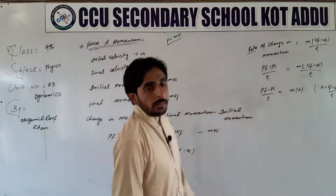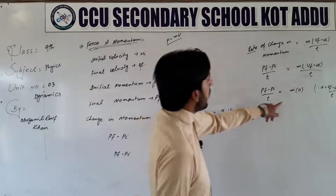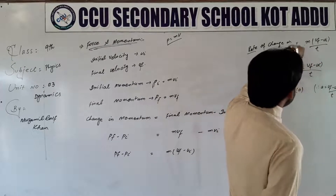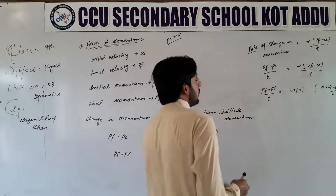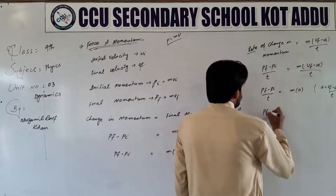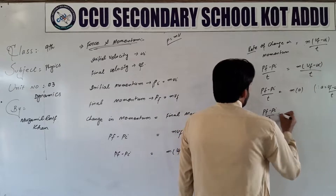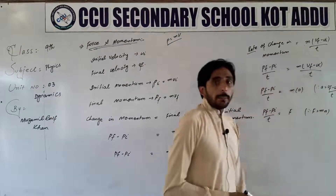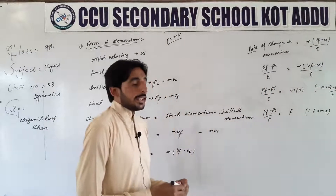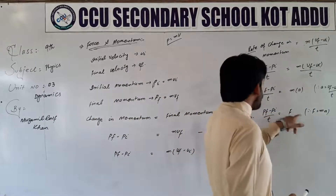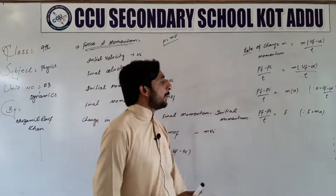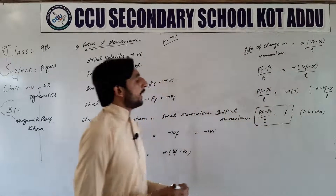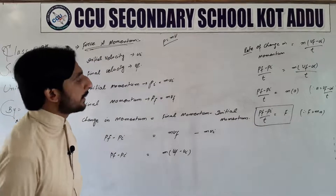Kisi jism ki velocity mein jo tabdili ki shara hoti hai use ham acceleration bolte hain — rate of change of velocity of a body is equal to acceleration. Uski jagah par hamne acceleration le liya. Ab dobara dekhte hain: pf minus pi over t — ma. F is equal to ma hota hai, from Newton's second law of motion — F is equal to ma. F hamare paas net force hai, m uska mass aur a uska acceleration hai. Yahan par aapko clear ho raha hai ke force is equal to rate of change of momentum — that is the relationship between force and momentum.